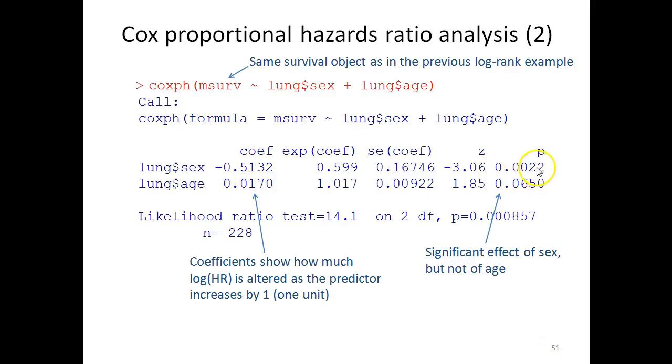Over here you have the p-values. And as you can see, sex is a significant predictor of death in this patient population with a p-value of 0.002...